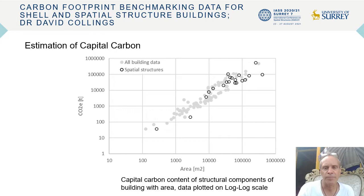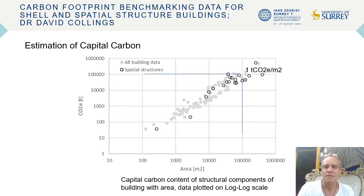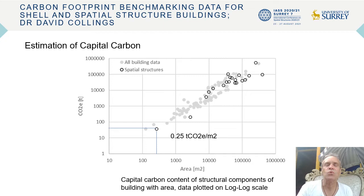Towards the upper area we're getting towards one tonne per square meter for very large space structures, but when we're down towards the smaller buildings we've got a significantly higher rate — about a quarter of that of the larger structures in terms of carbon efficiency.